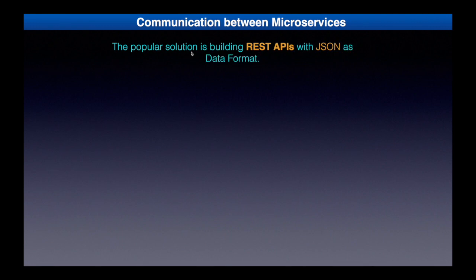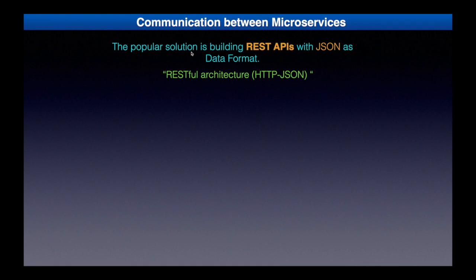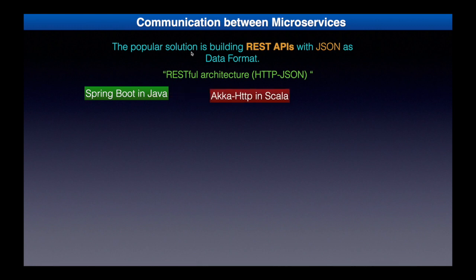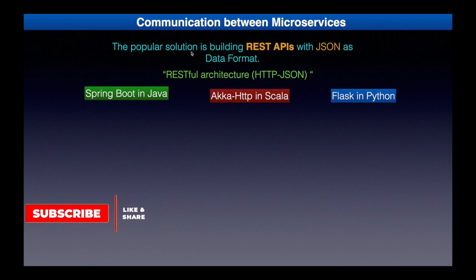Keeping all those factors in mind, architects provided a solution: building REST APIs with JSON as a data format, adhering to the principles of RESTful architecture — broadly speaking, HTTP with JSON. Following RESTful architecture principles, many frameworks emerged in different languages, like Spring Boot in Java, Akka HTTP in Scala, and Flask in Python. All of these frameworks use JSON as the data exchange format for their messages.